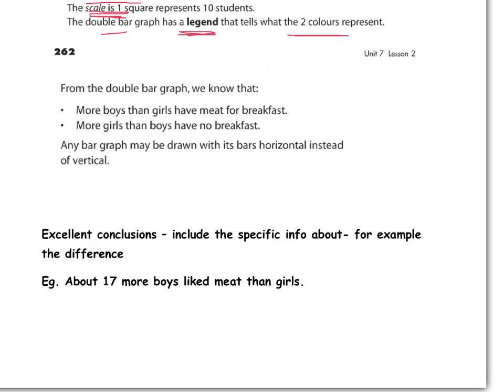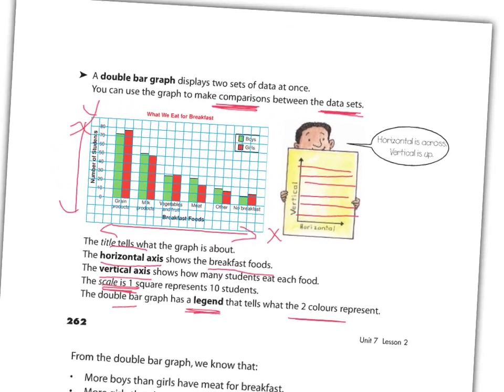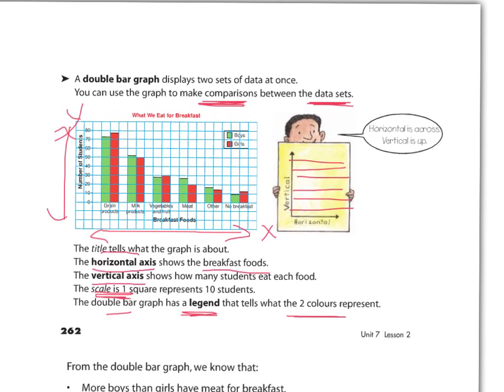Remember when you're making conclusions, an excellent conclusion includes specific information about two sets of data. So for example, approximately 17 more boys liked meat than girls. That would be a specific conclusion. If I just looked at this and I said, ten boys have no breakfast, that's not a conclusion. That is just reading one bar. If you're just reading one bar or one point on the graph, that's not a conclusion. You need to be comparing some data in order to make a conclusion. And to make it excellent, you go above and beyond and perhaps discuss two or three points together or the difference between the two, something of that sort.